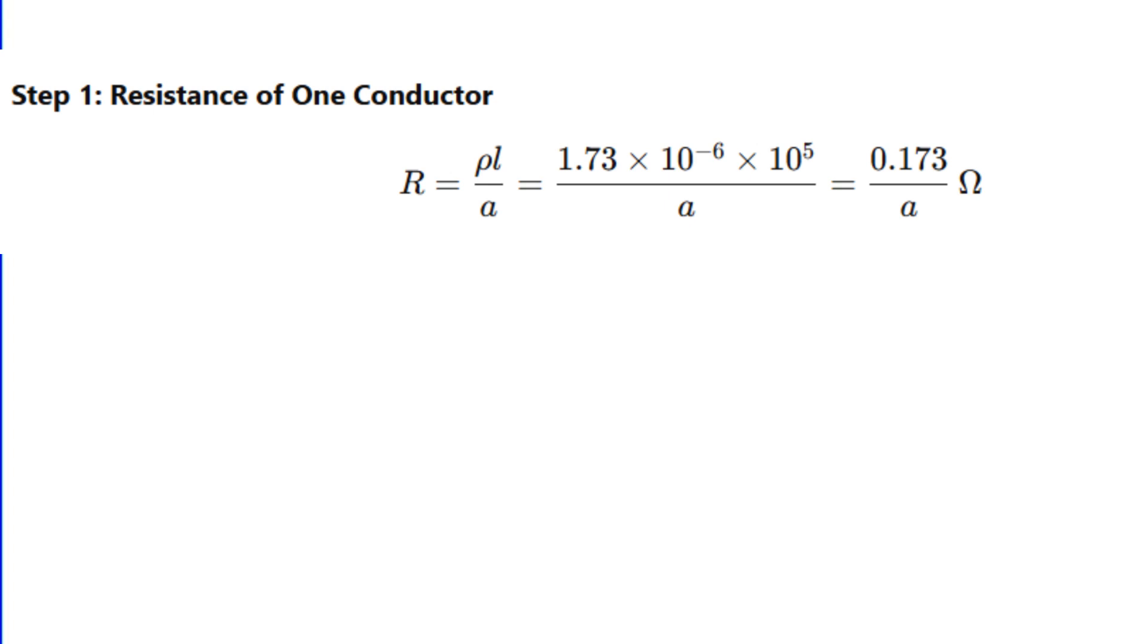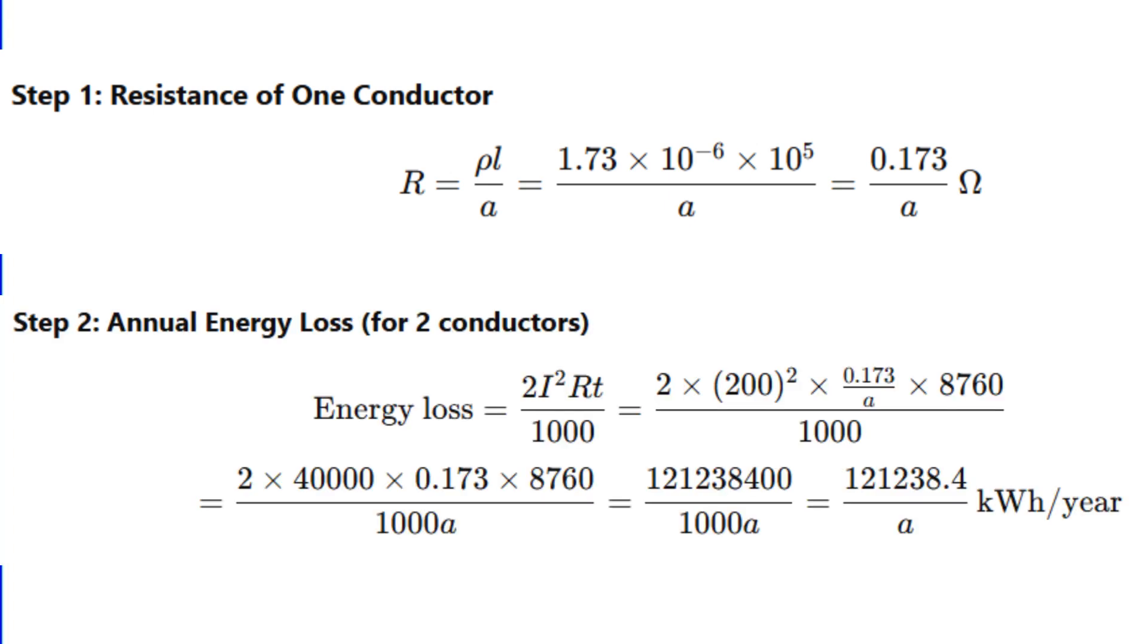Let's calculate. First, find the resistance of one conductor. R equals ρL by A equals 0.173 divided by A ohms. Now, energy loss in kilowatt hour per year is 2 times I squared RT divided by 1000. That is, 2 times 200 squared times 0.173 times 8760 divided by 1000A, which comes out to 121,238.4 divided by A kilowatt hour.